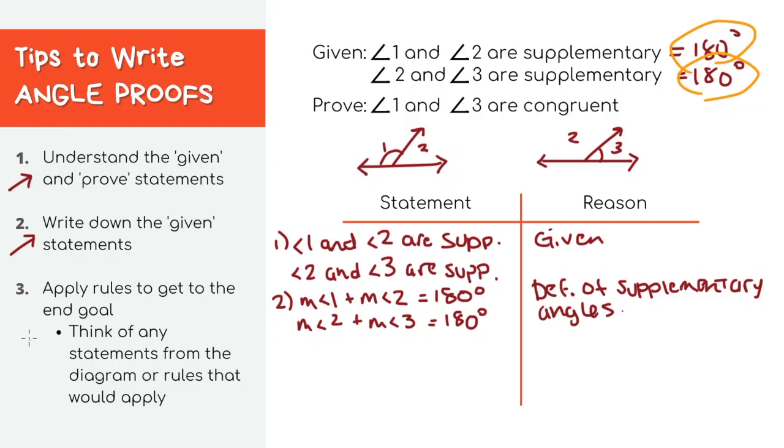Finally, let's start by applying some rules to get to the end goal. We're trying to prove that angle one and angle three are congruent. So we have to show somehow that angle one and angle three are related. Since this equals 180 and this also equals 180, we can actually just set them equal to each other.